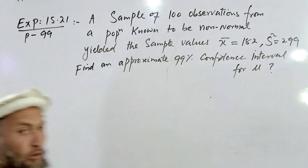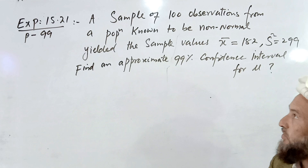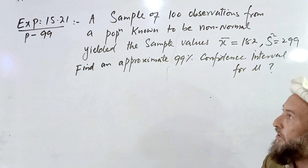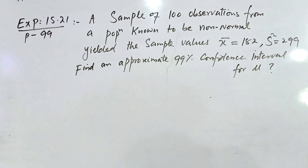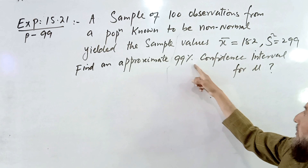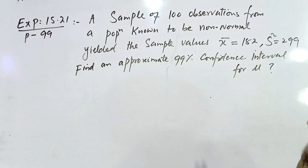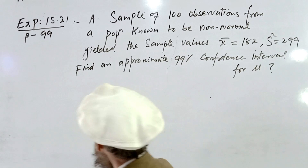Hello everyone, Assalamu Alaikum. Once again Maqbool Islam is in front of you. Today we are going to learn Example 15.21, page number 99: a sample of 100 observations from a population known to be non-normal yielded the sample mean X-bar equal to 182 and sample variance S-squared equal to 299. Find an approximate 99% confidence interval for the population mean. Since the sample size is sufficiently large, by the Central Limit Theorem the Z distribution applies.